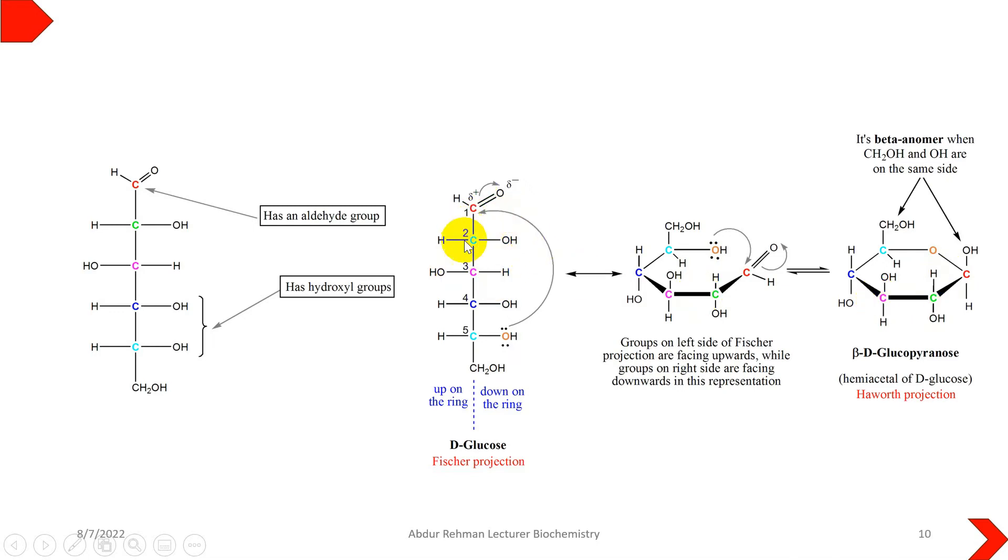Similarly, if the hydroxyl group on carbon number one, which is the anomeric carbon, is up the ring, that will be beta anomer, and if down the ring it will be alpha anomer. So two stereoisomers will form in cyclic structure.